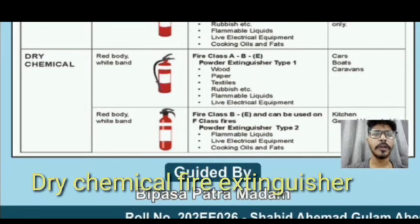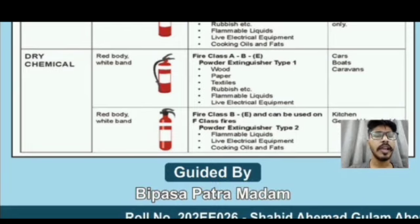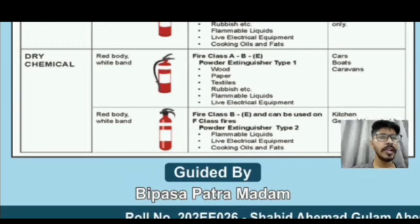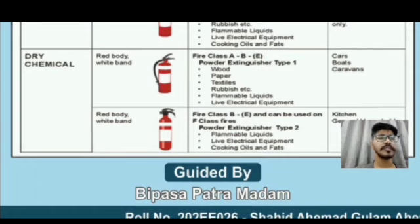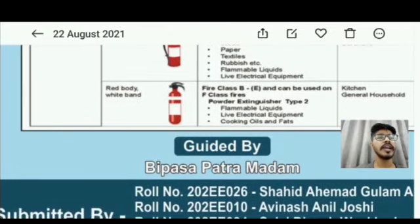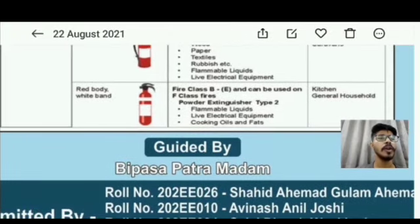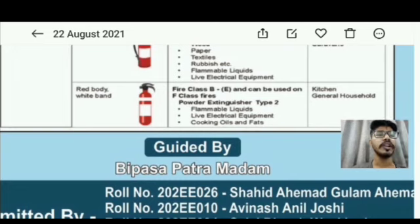There is another type of fire extinguisher — the dry chemical extinguisher. You can recognize it by its red body with a white band. It has two types: the first type is used for wood, paper, textiles, rubbish, flammable liquids, and live electrical equipment, and also in cars, boats, and caravans. The second type covers flammable liquids, live electrical equipment, and cooking oils and fats, used in kitchens and general household settings. That covers all parts of the fire extinguisher chart — thank you.